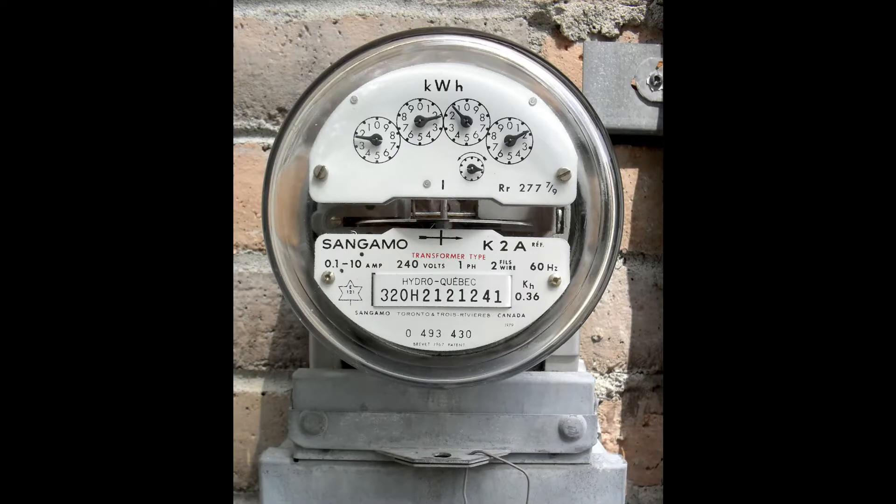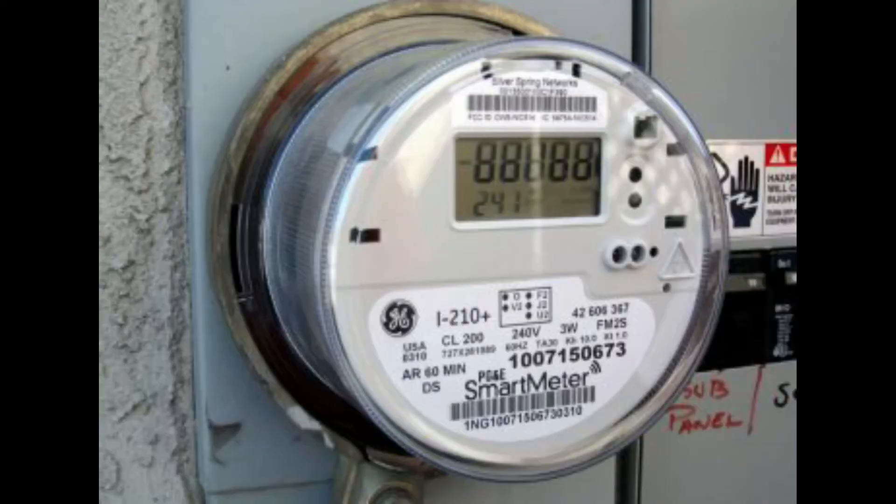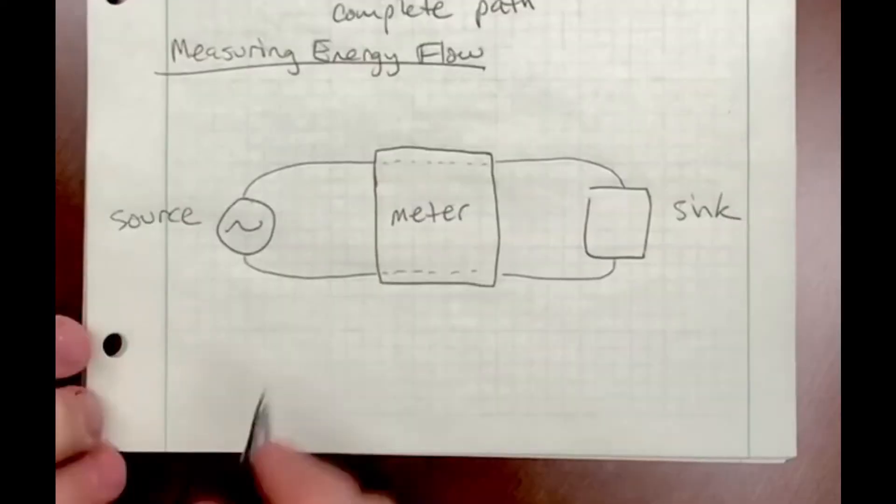Here's an old school meter that has a little rotating disk to measure the energy uses of a house. Here's a more modern smart meter with a digital display.